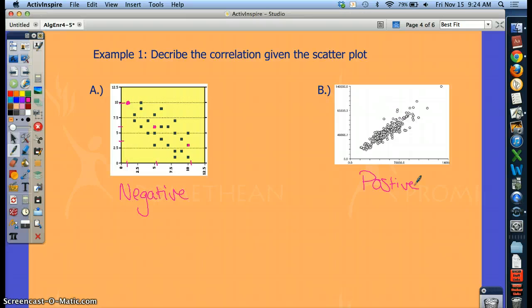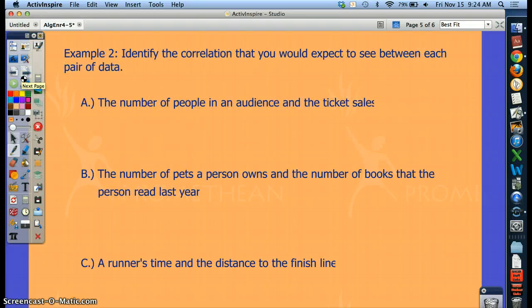You could also describe the correlation given a situation. So not given the graph, but given words. Let's think about these situations. What kind of correlation would we expect to see? The number of people in an audience and the ticket sales. Let's think about that. The number of people in the audience and the ticket sales. You know, sometimes people buy a ticket, but they don't go. Think about the Steeler games. It might be sold out, but there's still empty seats. Or maybe you buy tickets to a show, but then all of a sudden your plans change. But overall, what's going to be the relationship? The more tickets you sell, you're probably going to have more people in the audience, right? If I sell maybe 10 tickets, I might have around 10 people, maybe 9, maybe 8. If I sell 100 tickets, I might have 70 or 80 or 90 showing up. The more tickets you sell, the more people are going to show. So that would be what type of relationship? Positive. So that's a positive correlation.